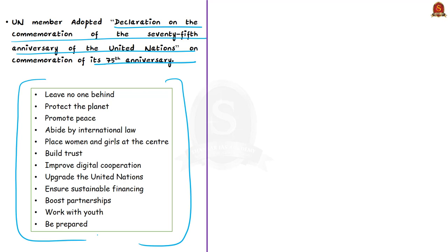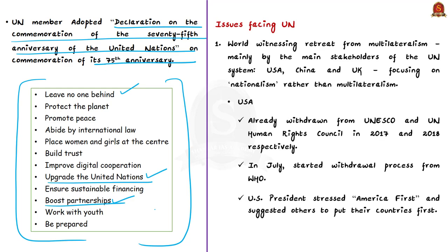Commitments such as 'Leave No One Behind' and 'Upgrade UN and Boost Partnerships' are aimed at improving multilateralism. Countries are surrounded by many problems, the greatest being the unpredicted pandemic, which has led to the deepest recession since the 1930s. These scenarios warrant multilateral cooperation to revive the global economy. But instead of multilateral cooperation, the world is witnessing a retreat from multilateralism, even amidst the pandemic.